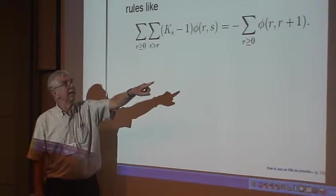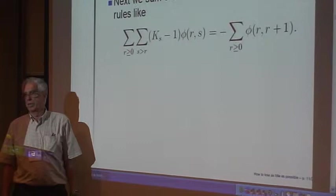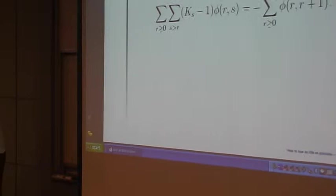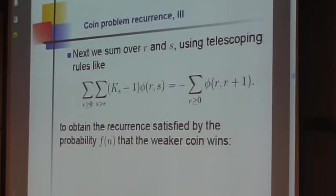And this is true for any function phi of compact support. So that's just a little technical point. So when you sum over r and s, the recurrence for the summand, you need to use a couple of things like that. Green's theorem? Discrete version of Green's theorem? Yes.